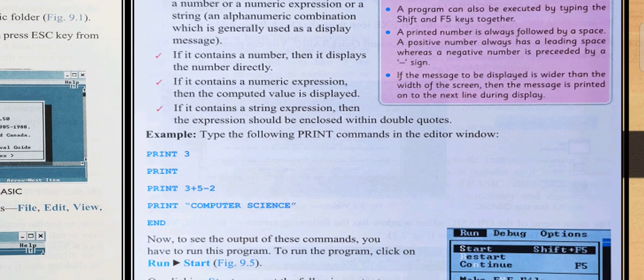Now type the following PRINT commands in the editor window: PRINT 3, PRINT, PRINT 3+5-2, PRINT "computer science", and END. Now to see the output of these commands, you have to run this program. To run this program, click on Run then Start.